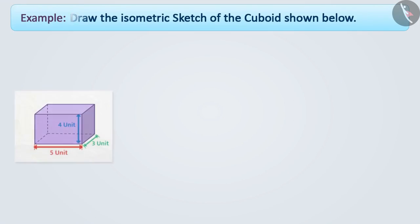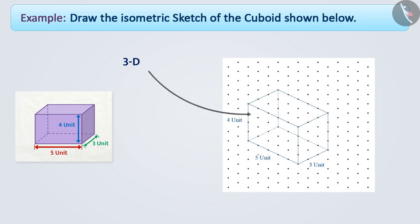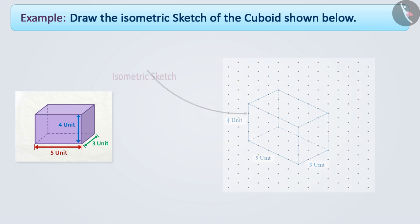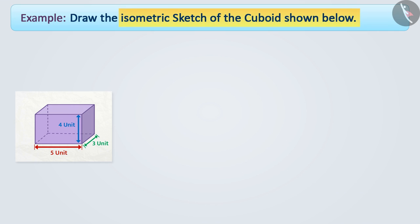Draw the isometric sketch of the cuboid shown below. If the measurements of the 3D shape shown on the paper are proportional, then such a picture is called an isometric figure. Now, we will draw an isometric sketch according to the given measurements.